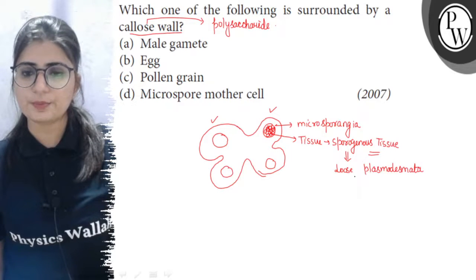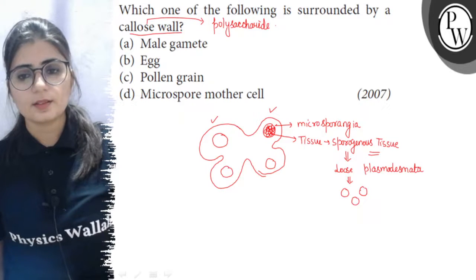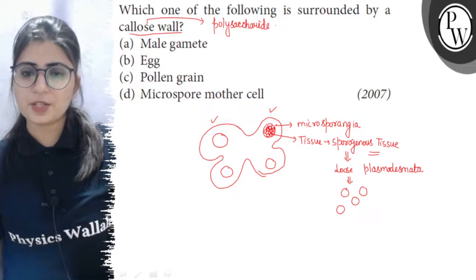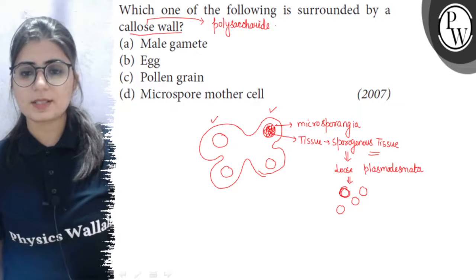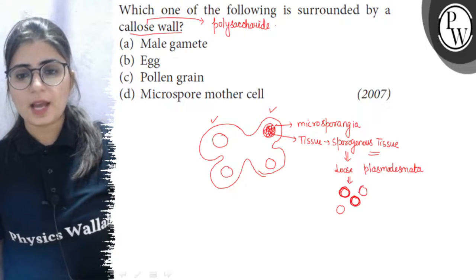So, they are loose and now the cells, each and every cell, they are separated from each other and this separation is done by the special covering of callose.